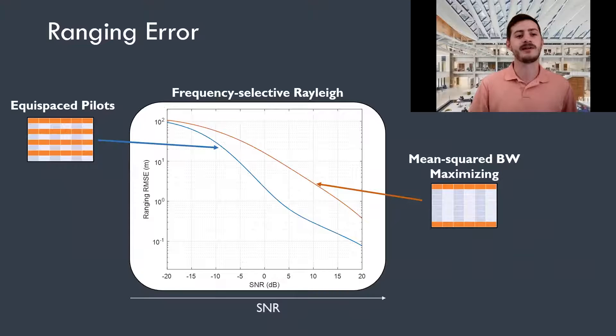So similarly for ranging, we can compare those two same signals. Now a unique property of this mean squared bandwidth maximizing signal is that traditional PNT knowledge would tell you that maximizing the mean squared bandwidth gives you the best time of arrival performance. However, that's not the case in what we see here.